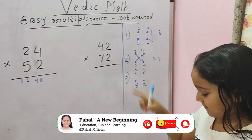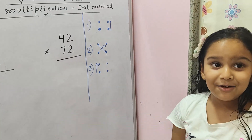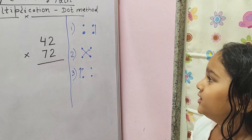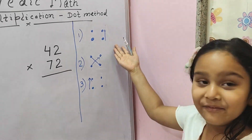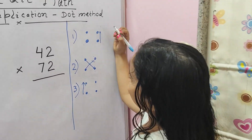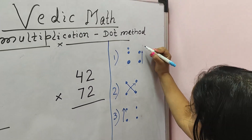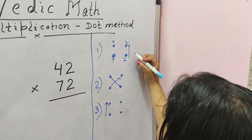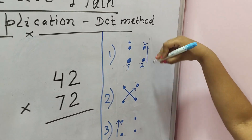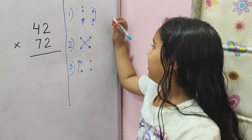Now the next sum. Let's see the second number. We have 42 and 72. So again we have these dots. Now let's multiply — we have the dots for 42 and 72. First we multiply the right side: 2 times 2 is 4. There is no carry forward.